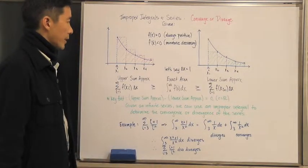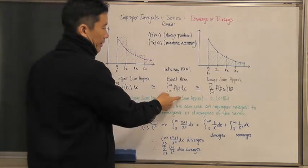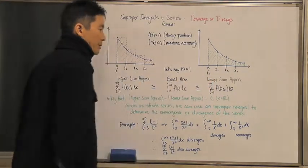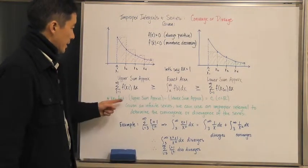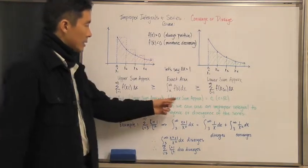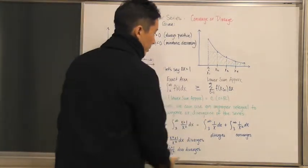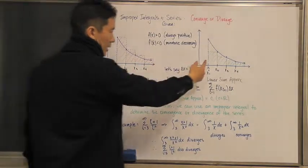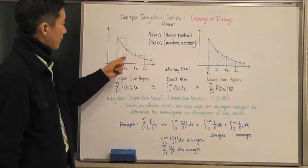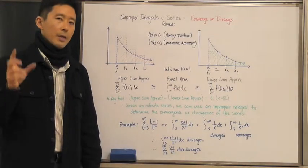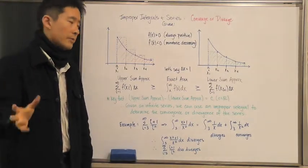If we look at the relationship between these, the upper sum approximation is always going to be greater than or equal to the exact area, which is also going to be greater than or equal to the lower sum approximation. A key fact is that the upper sum approximation minus the lower sum approximation is always going to be equal to c, where c is a real number — specifically, it's just that first rectangle, which is a constant.